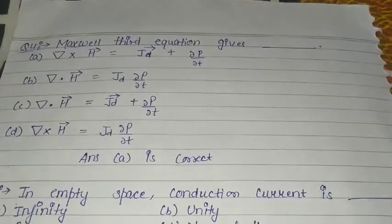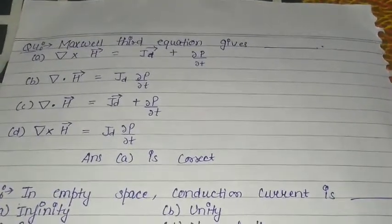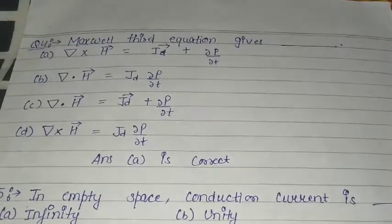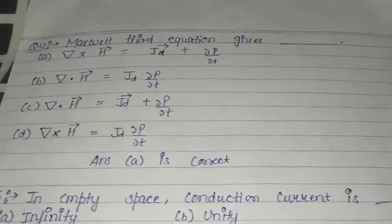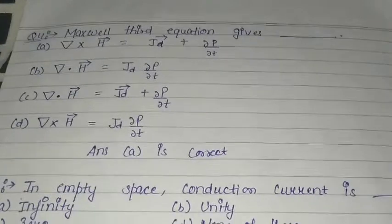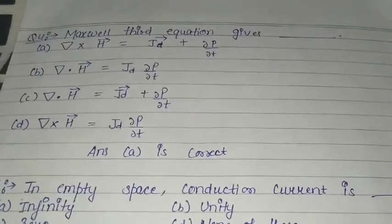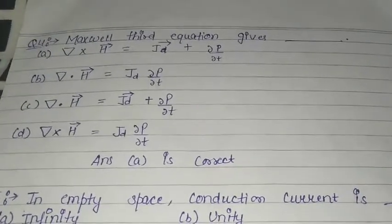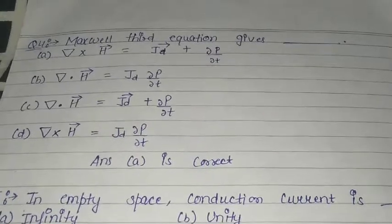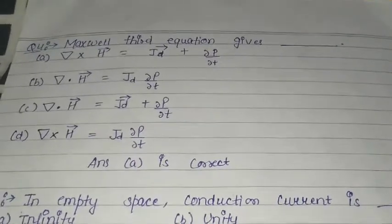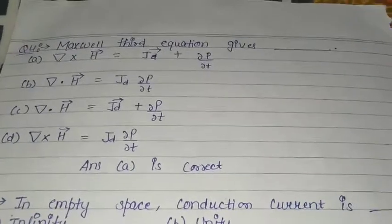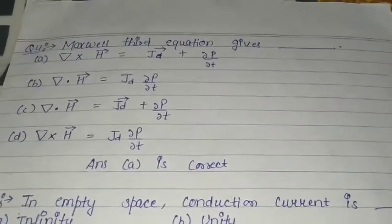Question number four: Maxwell's third equation gives — four options are given. You have seen the equations. From these, option A equation is correct for the third equation of Maxwell. Option A is the correct answer.